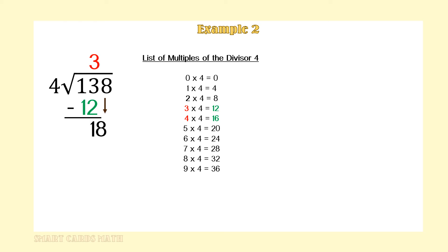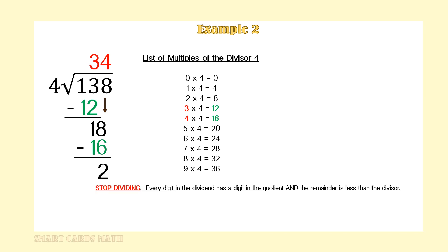3 times 4 equals 12. Subtract 12 from 13 — we get 1. Bring down the next digit in the dividend, which is 8. Can we get a group of 4 out of 18? Yes. How many groups? Go to your list of multiples of 4 — we can get 4 groups of 4 out of 18. So 4 is the next digit in the quotient. 4 times 4 equals 16. Subtract 16 from 18 to get 2.